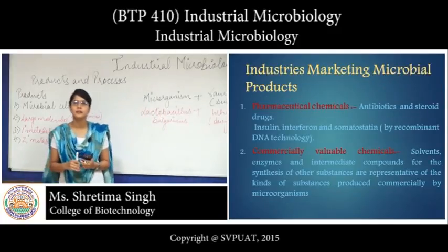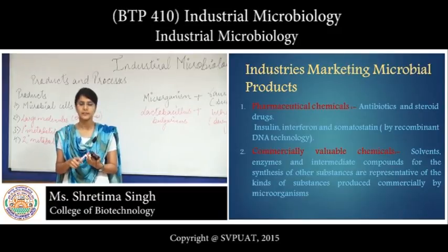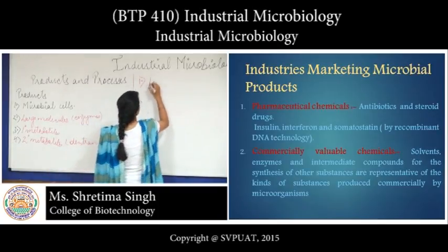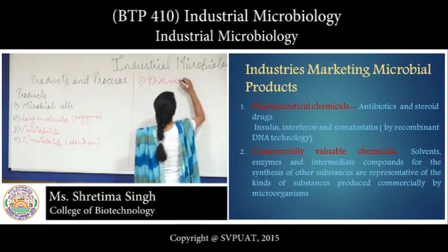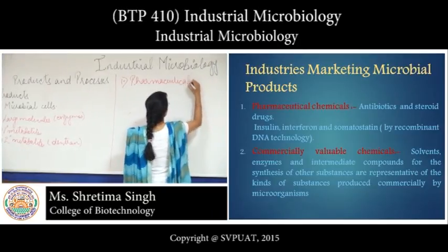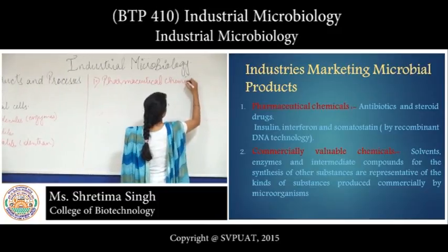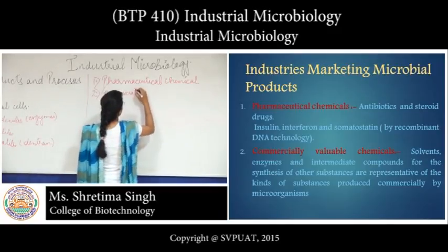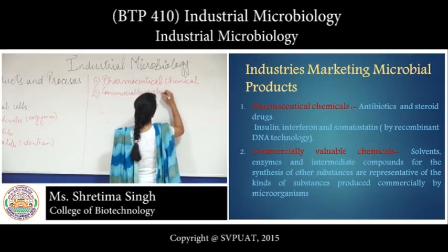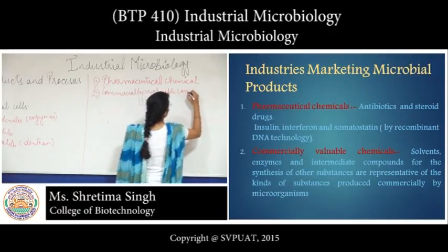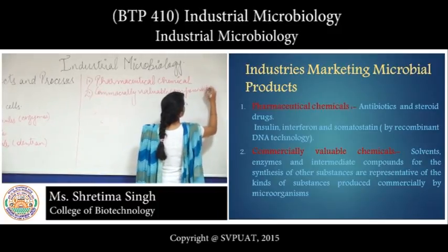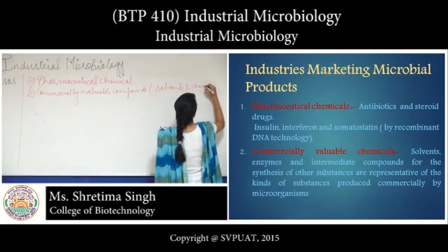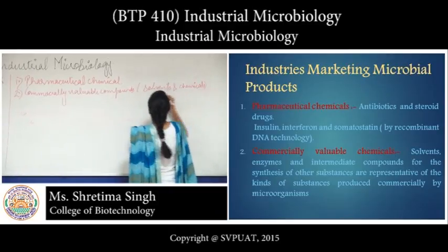There are major groups of industries categorized into mainly seven types. The first category is pharmaceutical chemicals. The second category is commercially valuable compounds, which includes all solvents, chemicals, and enzymes.